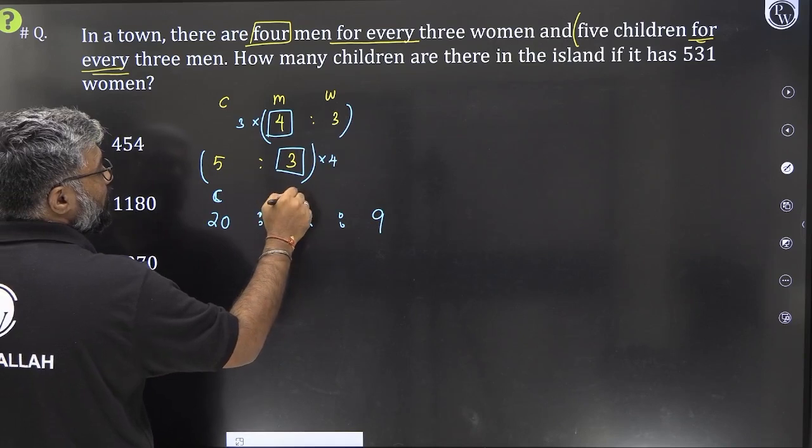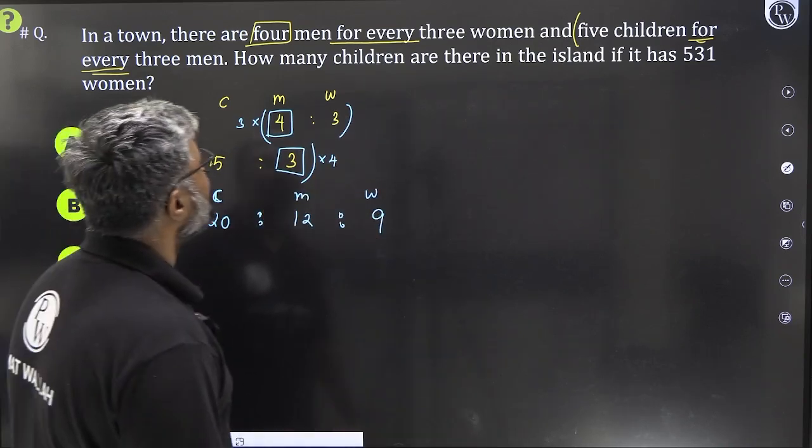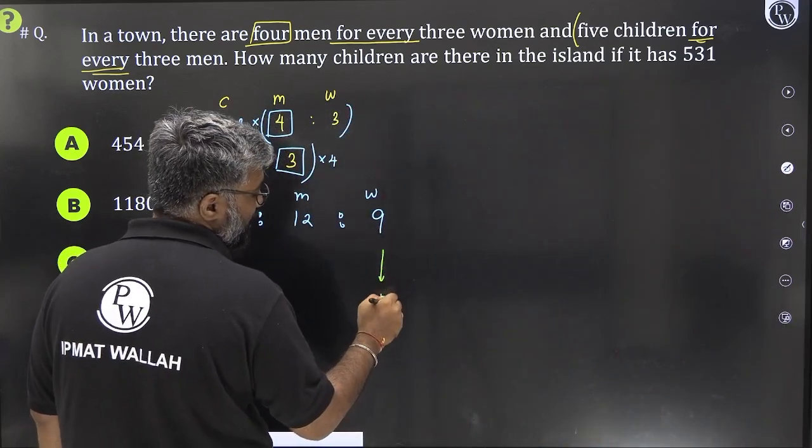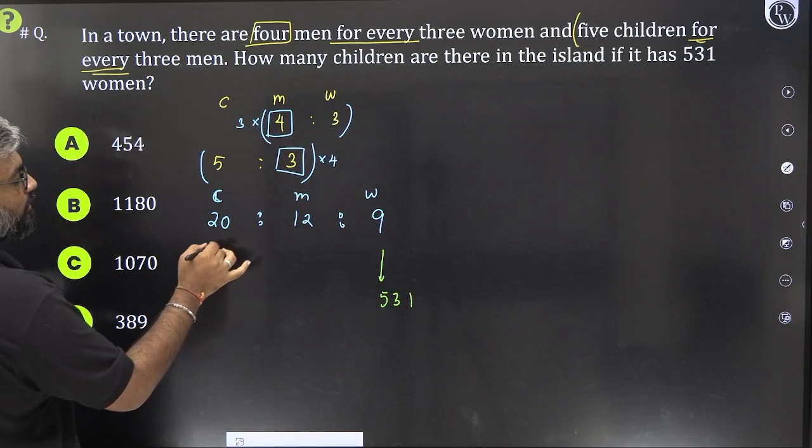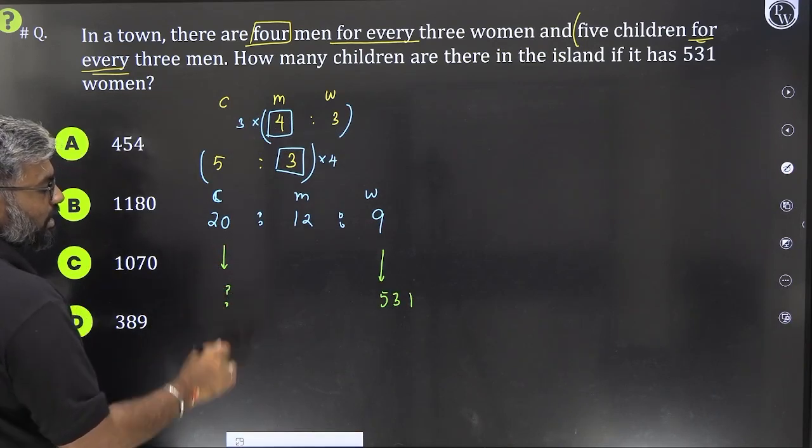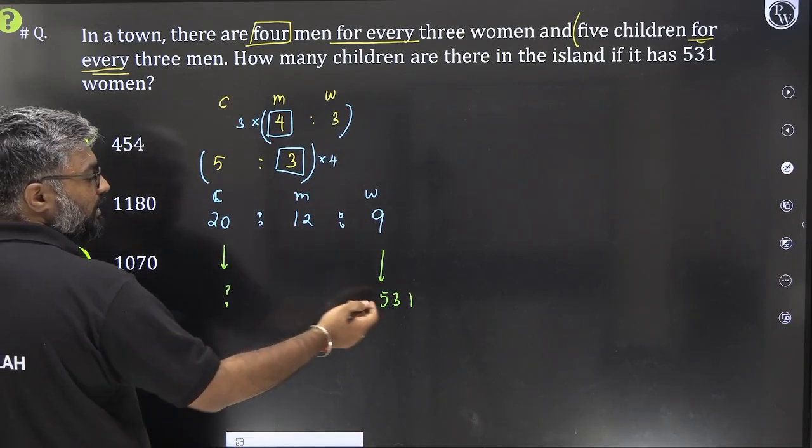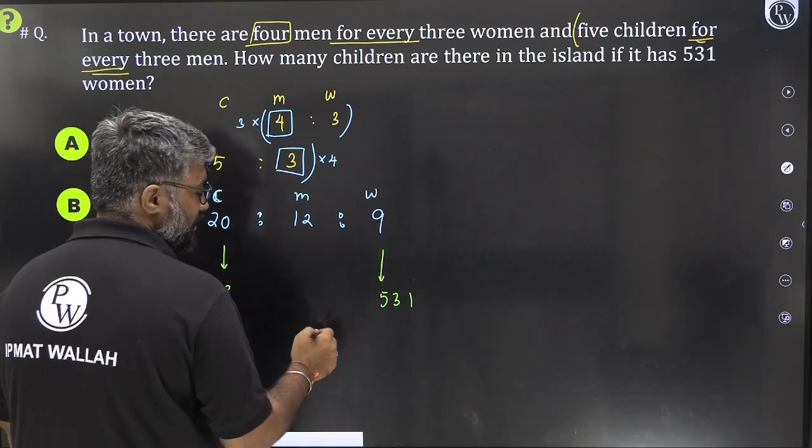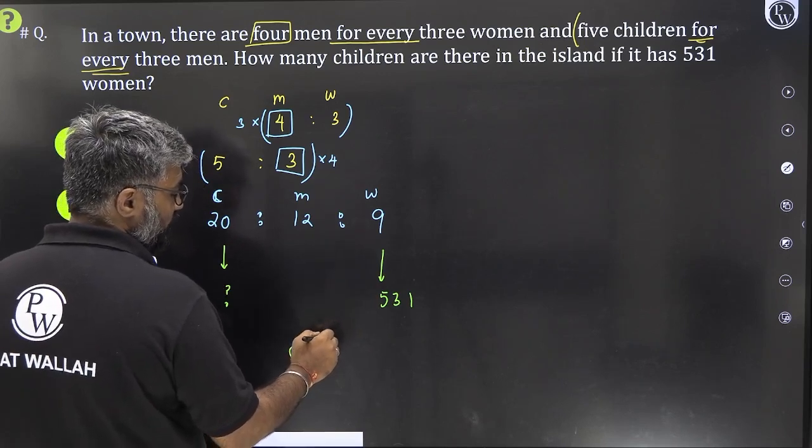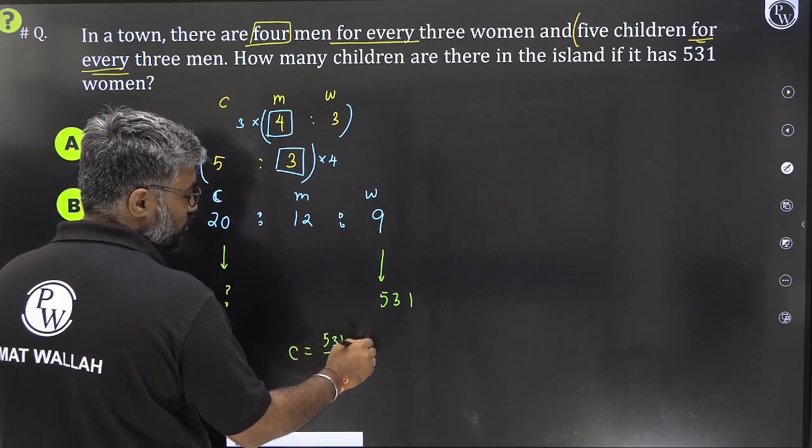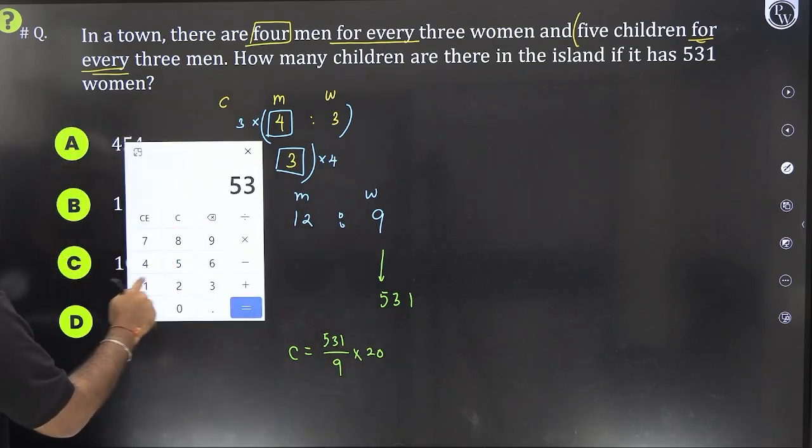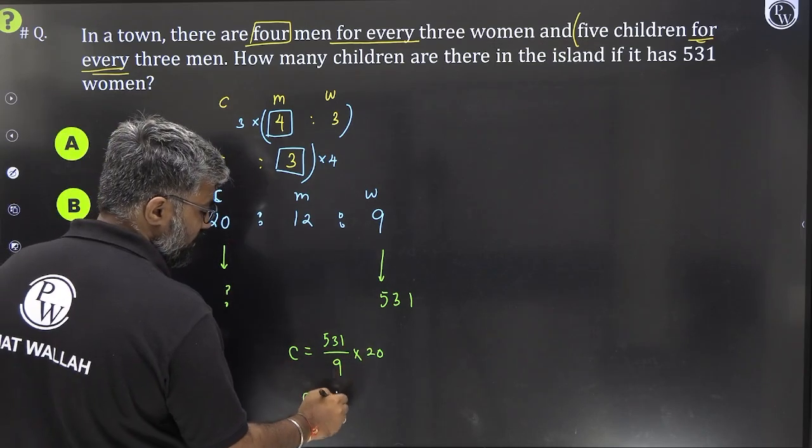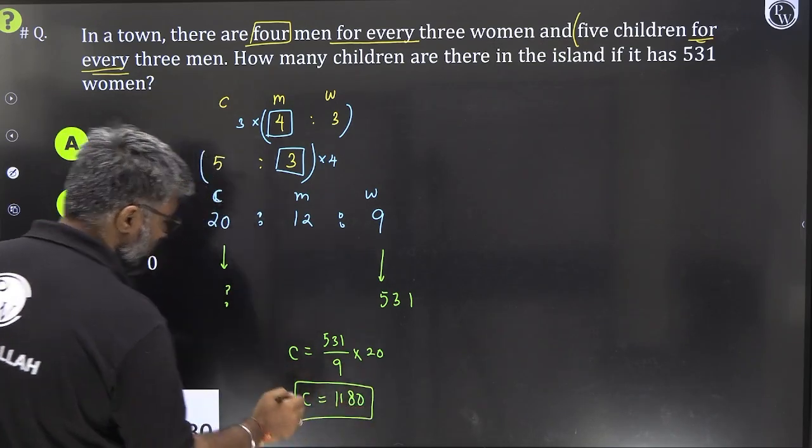They are saying if it has 531 women, if this is 531, then how many children would this island or this town have? So how much would it be? 531 divided by the total parts? No, just 9. This is just 9 parts. They are asking for 20 parts. The number of children would be what? 531 by 9 into 20. 531 by 9 into 20 gives us 1180 children. Option B.